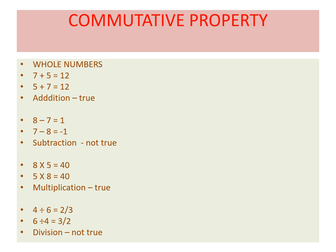For whole numbers: 7 + 5 = 12 and 5 + 7 = 12, so addition is commutative. 8 − 7 = 1 but 7 − 8 = −1, so subtraction is not commutative. Multiplication: interchanging factors gives the same answer, so it is true. Division: 4 ÷ 6 = 2/3 but 6 ÷ 4 = 3/2, so division is not commutative for whole numbers.